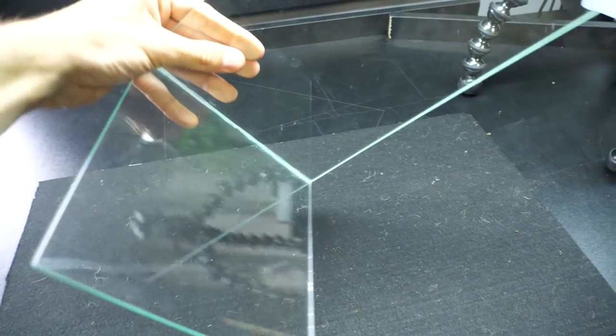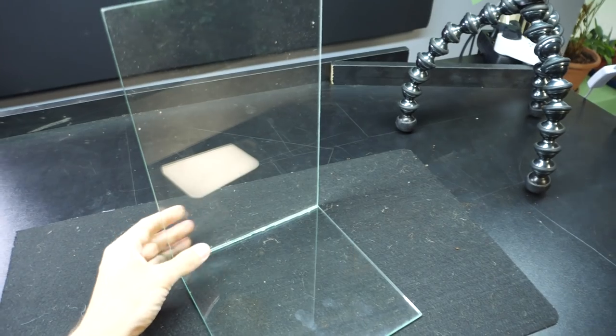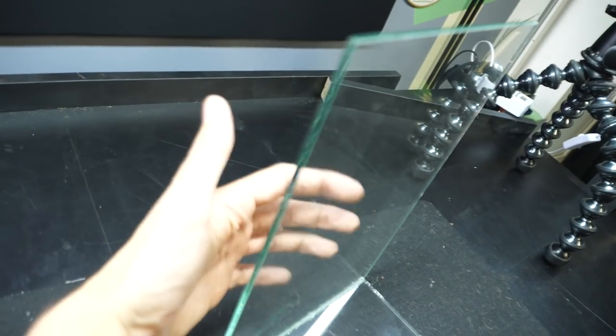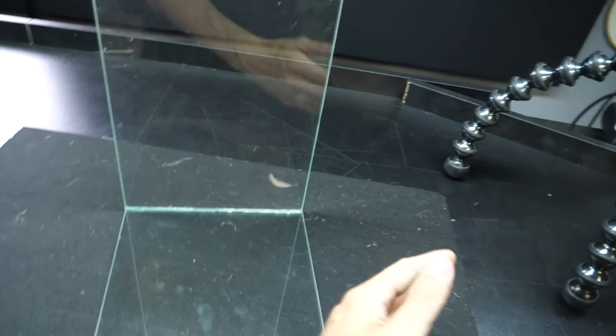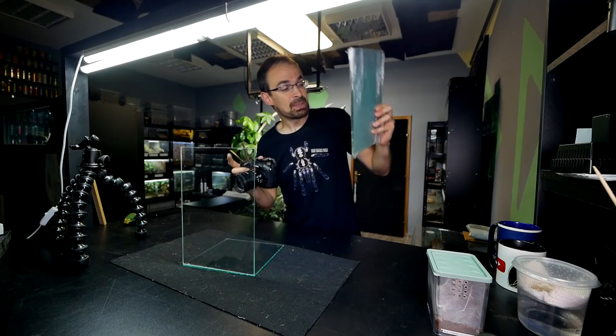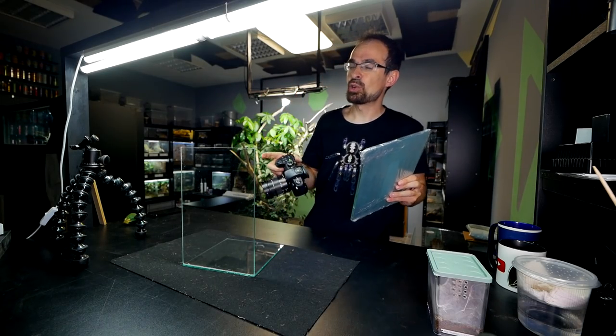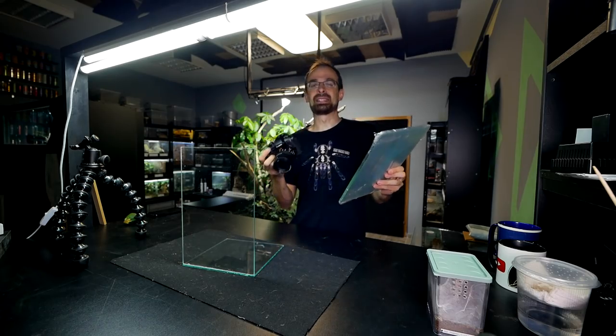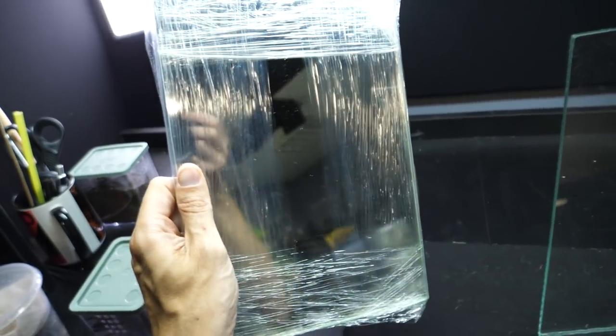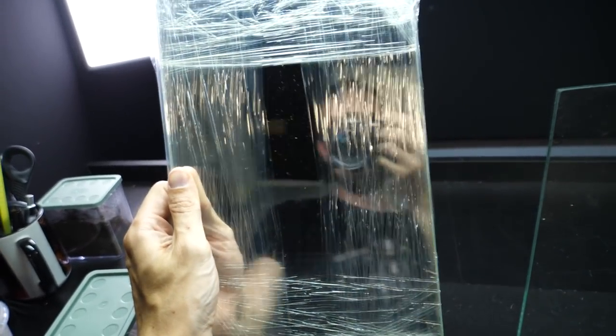You see this is the base of our enclosure when I'm making it. This is the bottom part and this is the back. So we are still lacking sides, front panel, doors and top lid. And the specific thing that we will do about this enclosure are its sides. Instead of using regular glass I'm going to use a mirror.